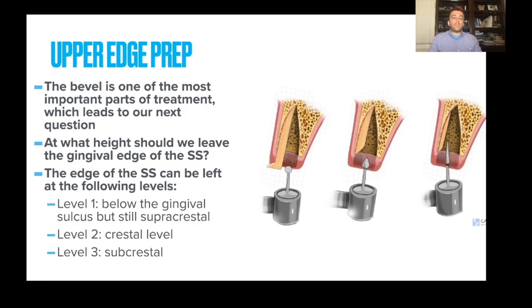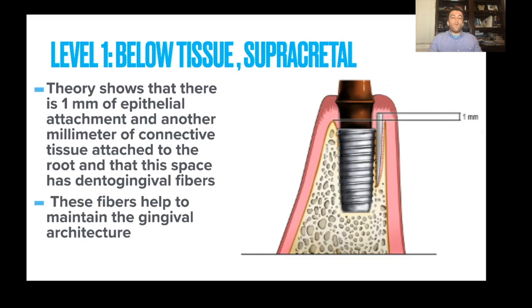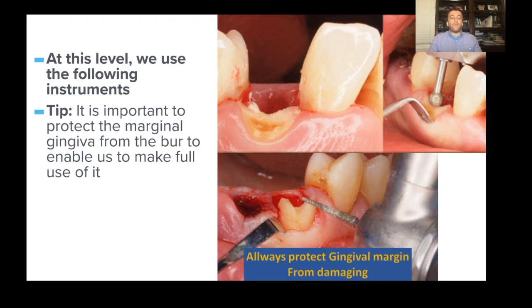Here's a case illustrating an upper first premolar and removal of the palatal segment. A mini flap has been raised in place — we'll talk about that next — to level the shield to the crest before the implant is placed. The bevel is one of the most important aspects of treatment. At what height should we leave the gingival edge of the socket shield? There are three philosophies: first, leaving the area below the gingival sulcus but still supracrestal, meaning the shield is above the bone level. Second, having the shield at crest. Third, having the shield subcrestal.